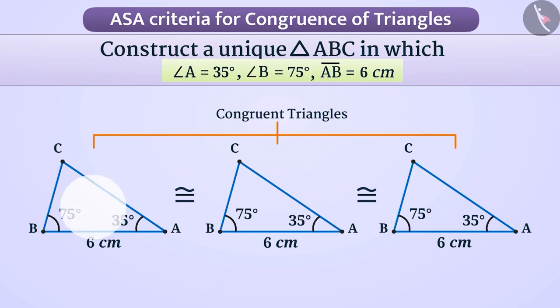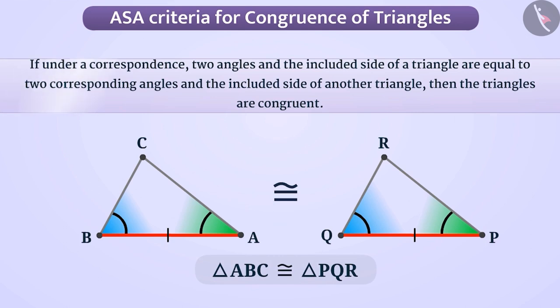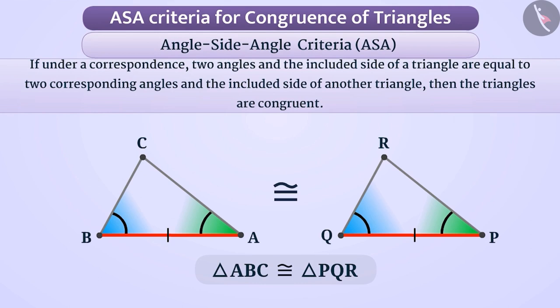With this understanding, we can form another rule to check the congruency of triangles, which states: if under a correspondence, two angles and the included side of a triangle are equal to two corresponding angles and the included side of another triangle, then the triangles are congruent. This condition of congruency is called the Angle-Side-Angle criterion, or in short, the ASA criterion.